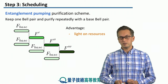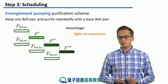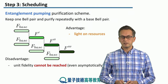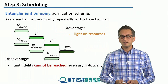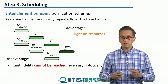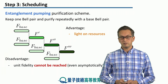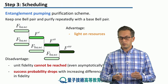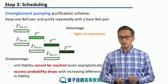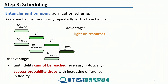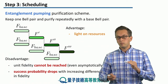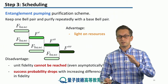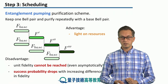So there are a number of advantages: this scheme is quite light on resources and you don't need as much memory as in the recurrent symmetric purification scheme. But there are some disadvantages as well. Unit fidelity cannot be reached even asymptotically — even if you keep running this scheme indefinitely, you will never reach unit fidelity. Furthermore, the success probability drops as the difference between the fidelity of the two pairs increases. We are always keeping one Bell pair of increasingly higher fidelity and running the purification scheme with a Bell pair of f_base, which remains constant. So the difference keeps increasing, and hence the success probability keeps dropping.